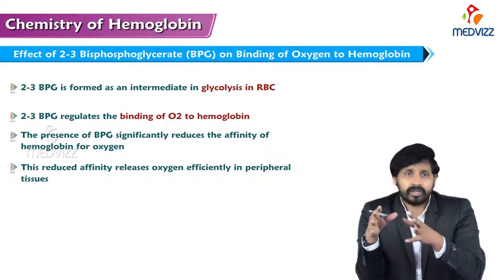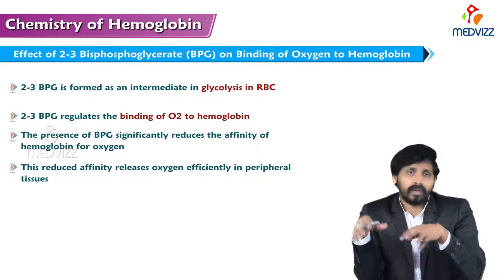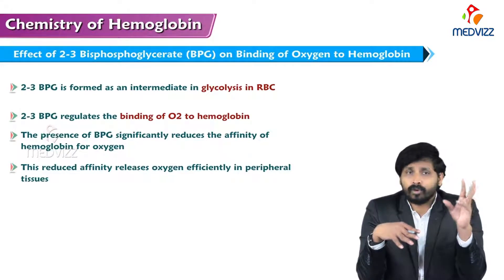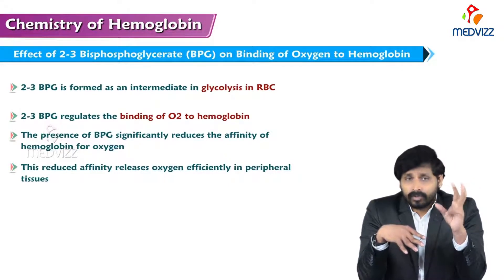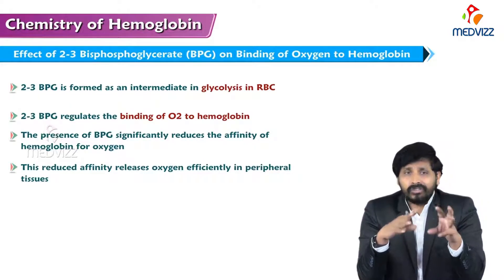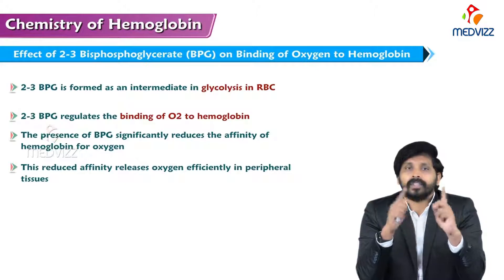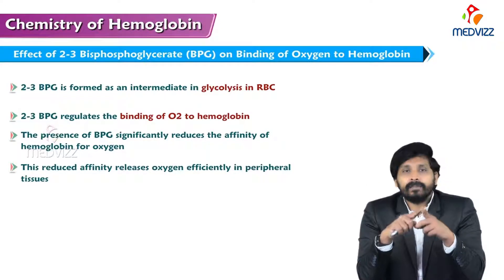That mechanism is known as the Rapoport-Luebering cycle, where 1,3-bisphosphoglycerate is converted to 2,3-bisphosphoglycerate instead of directly converting into 3-phosphoglycerate, because that direct conversion produces ATP by substrate-level phosphorylation. Substrate-level phosphorylation is the generation of ATP at the substrate level without the help of the electron transport chain.